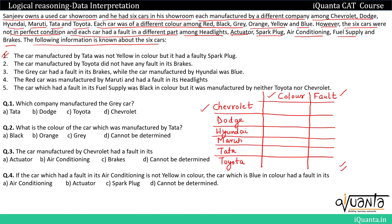The first clue is the car manufactured by Tata was not yellow in color, but it had a faulty spark plug. So the Tata car is not yellow, but it had a faulty spark plug — let us write SP for spark plug in the table.